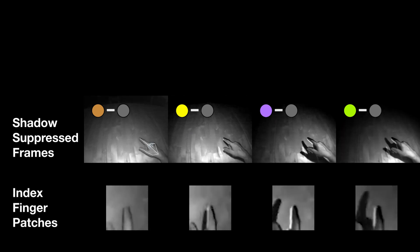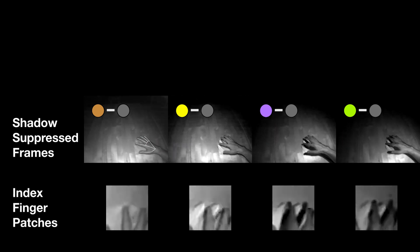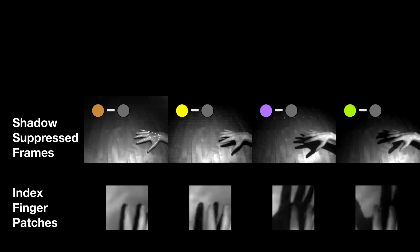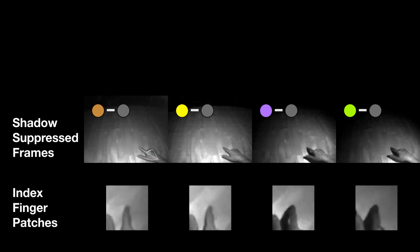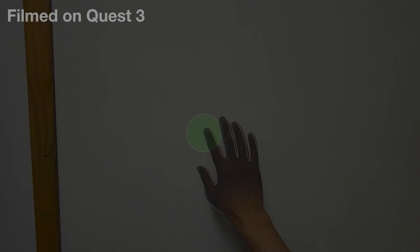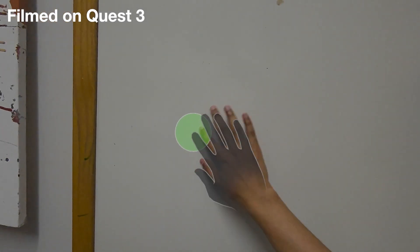We extract patches for all visible fingers and orient them to be finger aligned. For each finger, we take the finger patches from one or more shadow casting frames and pass them into a neural network for touch prediction. Here you can see the live touch prediction in XR.